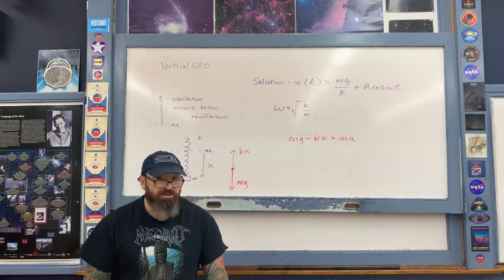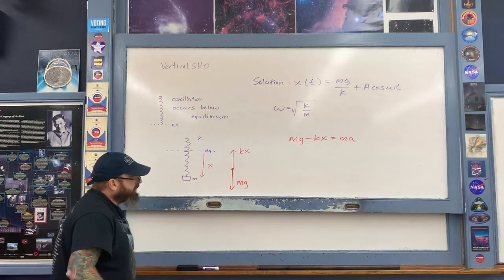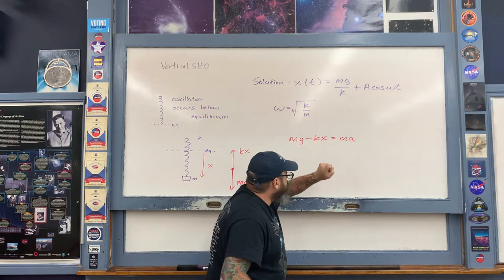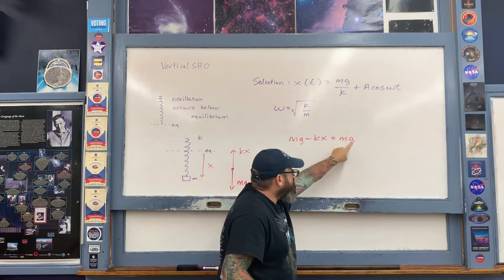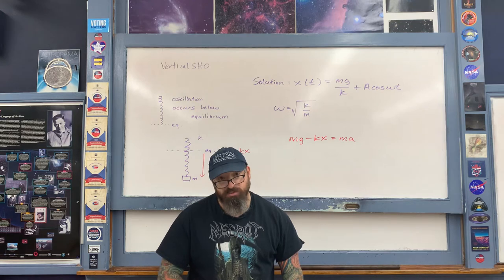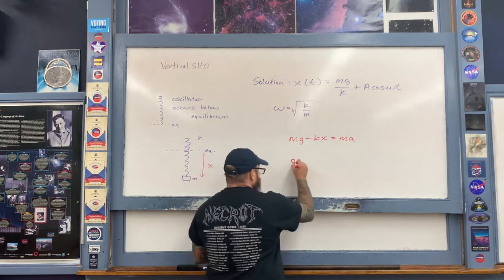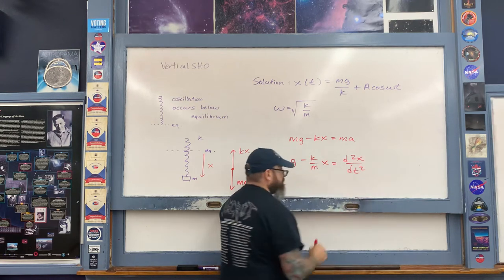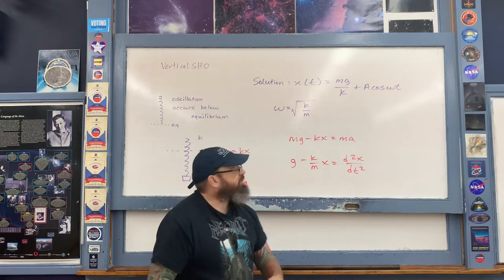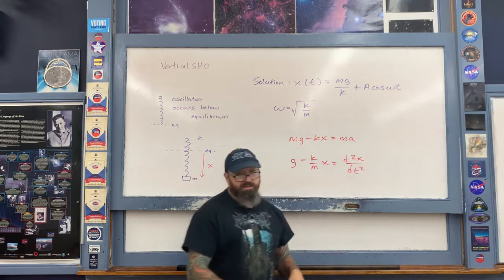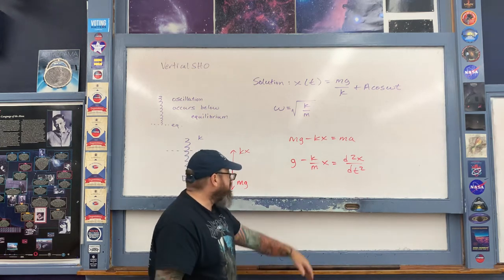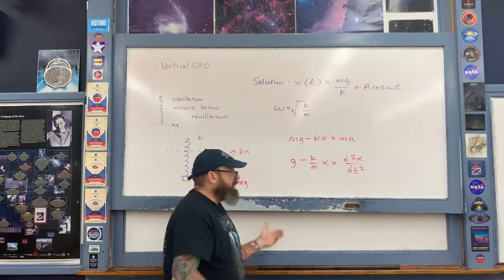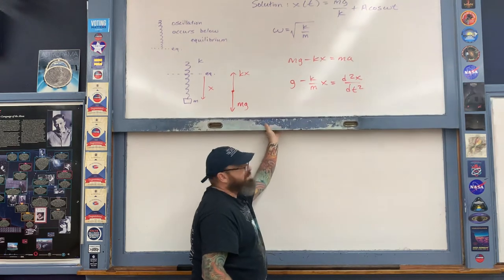Now let me divide mass m into each term, and I'm also going to write the acceleration as the second derivative of position with respect to time. When you do that, you end up with the differential equation. Now what we have to do is show that the position expression is in fact the solution to this differential equation. The way we do that is we plug x into this expression and take the second derivative, then plug it into the differential equation. So let's take the position equation and start taking derivatives.